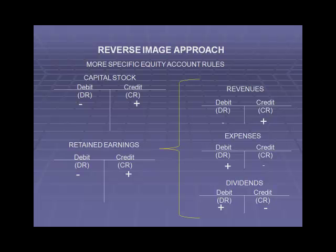Revenues are decreased with a debit and increased with a credit. Why? Because revenues — think of sales — money is coming in from selling to customers. So if we credit revenues, that is an increase with a credit, which will translate to an increase to retained earnings, because retained earnings is also increased with a credit.